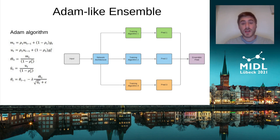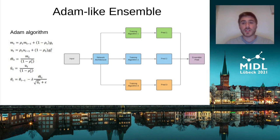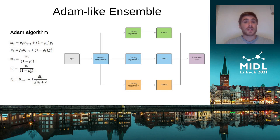We have an input image and one common network architecture, which is ResNet in our case, and we train each ResNet using a different optimization algorithm proposed in the literature or proposed in our paper. In this way we create a diverse ensemble and each network in the ensemble makes its own prediction. These predictions are averaged and the final classification is based on the average of the classifications.